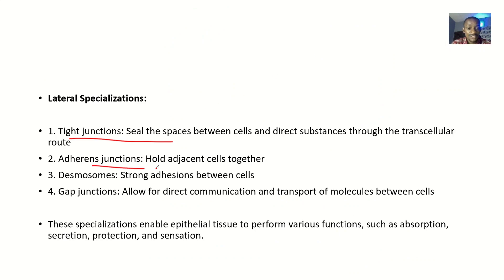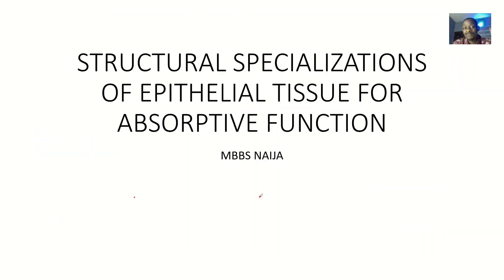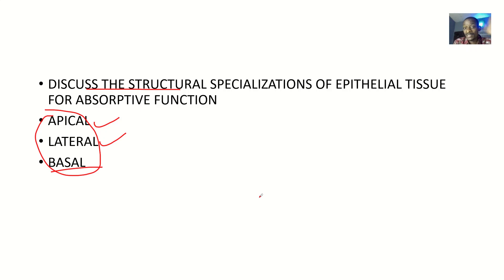Then we have adherence junctions, which hold adjacent cells together. Desmosomes provide strong adhesion between the cells. Gap junctions allow for direct communication and transport of molecules between cells — so if one cell wants to send a substance to another cell, it does so through the gap junctions. Those are the apical, lateral, and basal specializations of epithelial tissues for absorptive function.